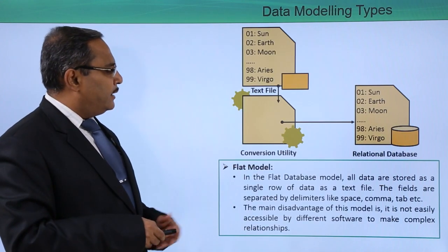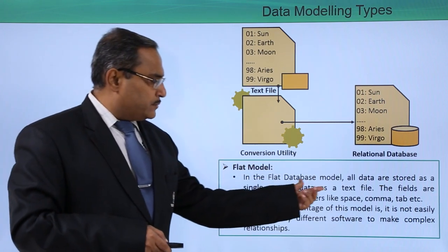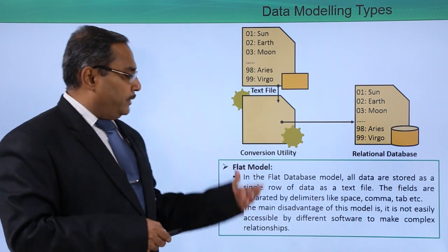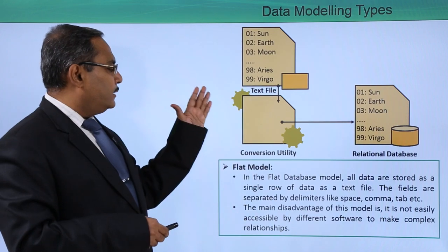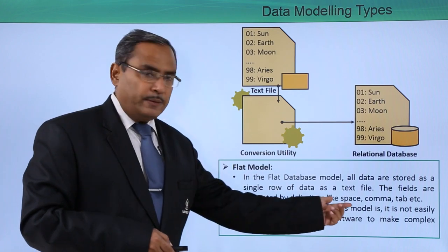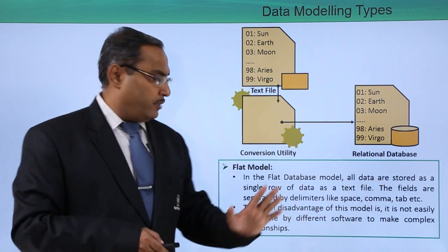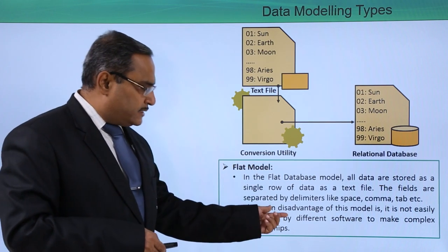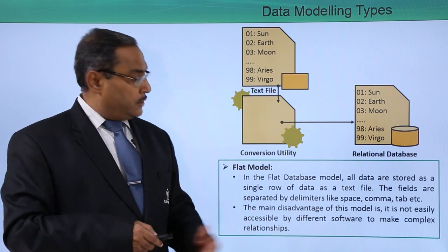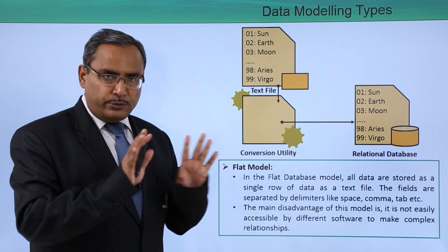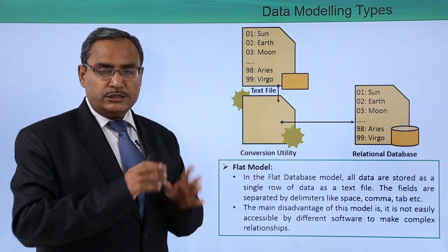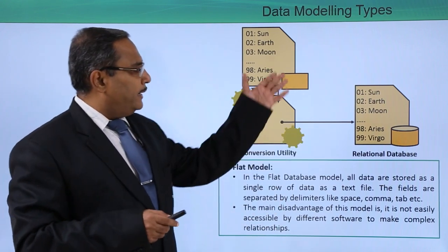Starting with the flat model: in the flat database model, all the data are stored as a single row of data as a text file. The fields are separated by delimiters like spaces, commas, tab, etc. The main disadvantage of this model is it is not easily accessible by different software to make complex relationships between them.